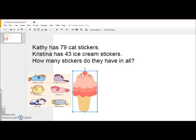Today, we will be using regrouping to solve the following problem. Kathy has 79 cat stickers. Christina has 43 ice cream stickers. How many stickers do they have in all?